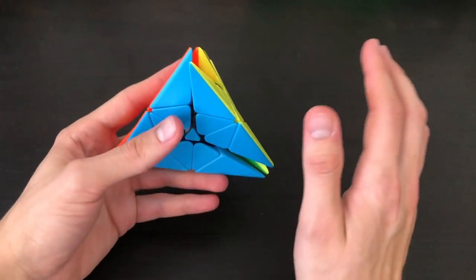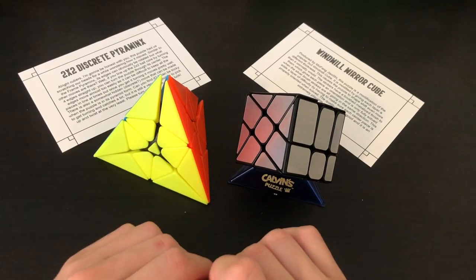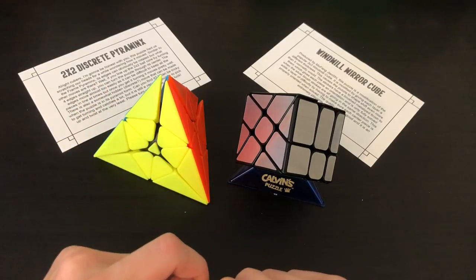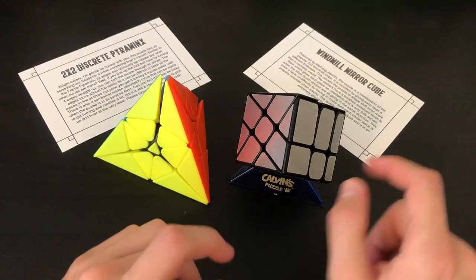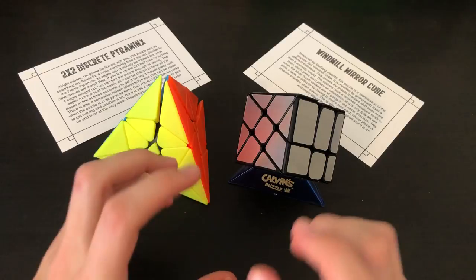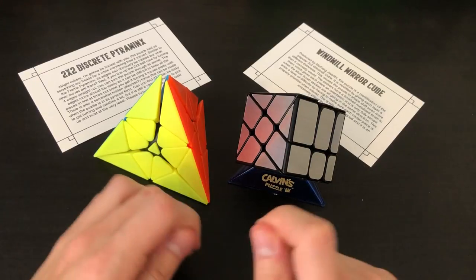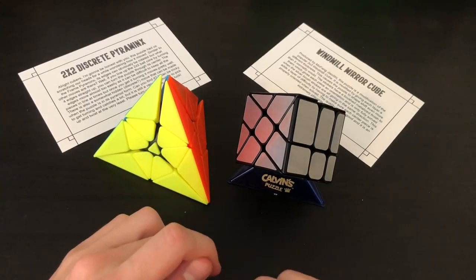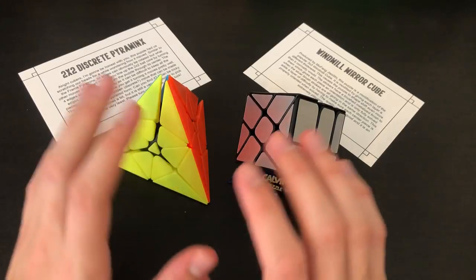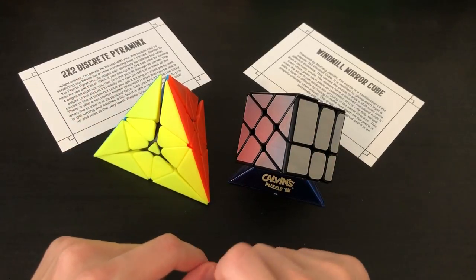So there's this month's puzzle crate unboxing. We have the 2x2 discrete pyraminx which is extremely frustrating to turn, and we have the windmill mirror cube which is a little bit more challenging than your standard mirror cube. So if you want a little bit of a challenge I definitely recommend the windmill mirror cube. And if you want something that looks really cool on your shelf then I'd recommend the 2x2 discrete pyraminx.